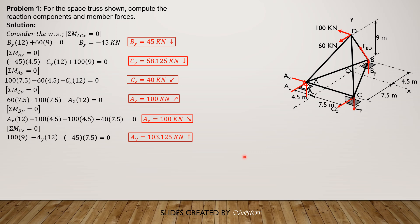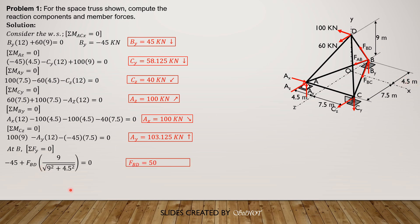We start at joint B — isolate joint B and assign direction of forces, always assuming tension. We do summation of forces along Y first so that we can solve for FEB directly. FEB times its Y component — 9 divided by the distance, which is the square root of 0 squared plus 9 squared plus 4.5 squared — minus 45 (since BY's magnitude is negative 45), plus FBD times 9 over the square root of 9 squared plus 4.5 squared, equals 0.